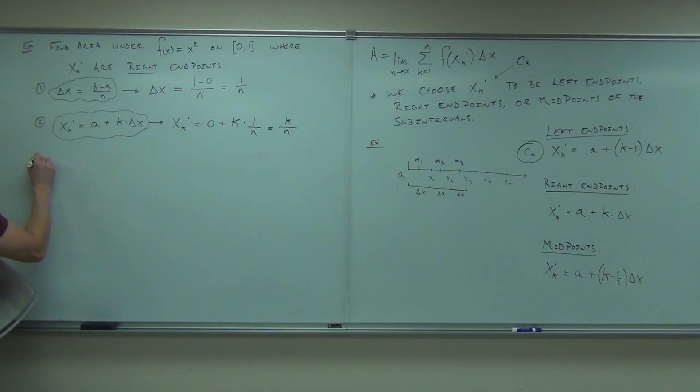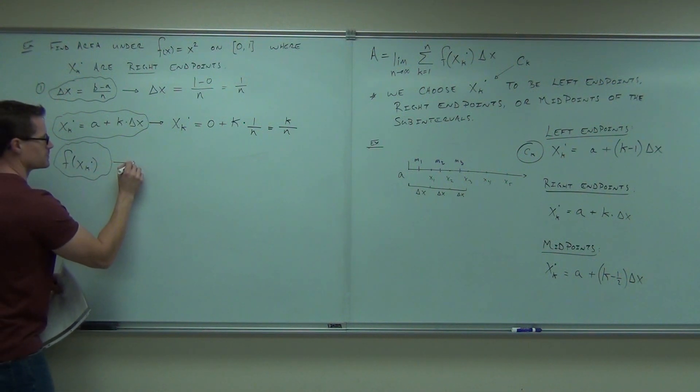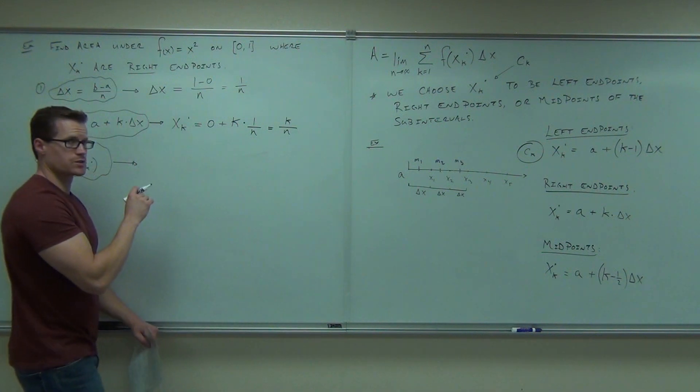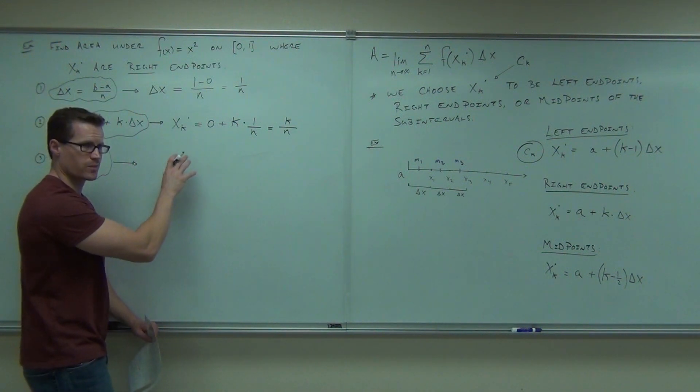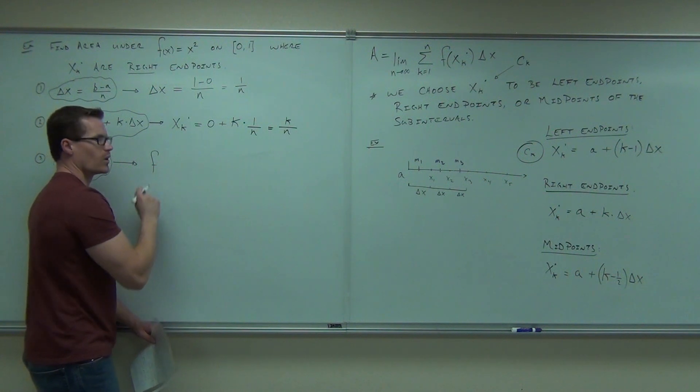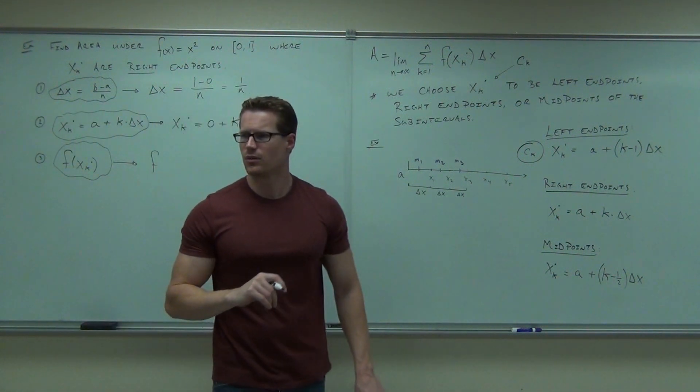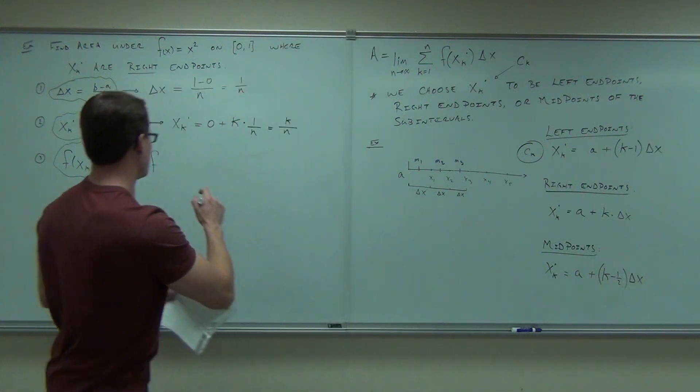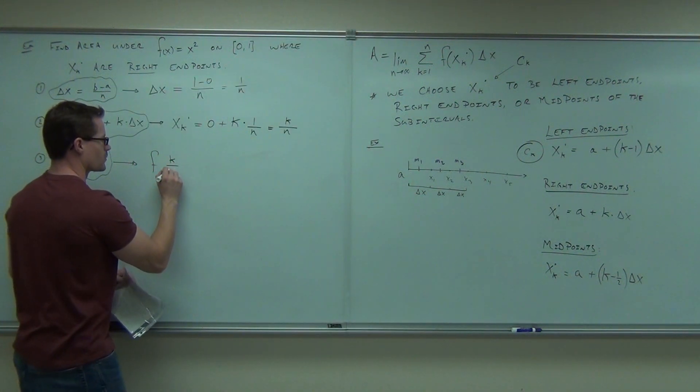So step number three says I want f of x_k. In our case, that's this. Look, go slowly. I'm showing you every step. That's f of, what is x_k for us, ladies and gentlemen? What is f of x_k? k over n. So we're going to take f of k over n.